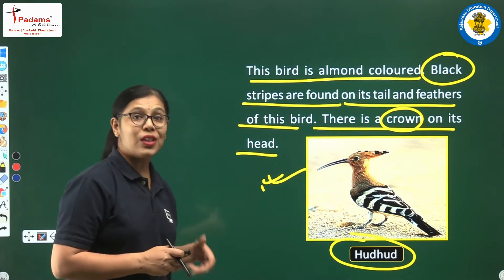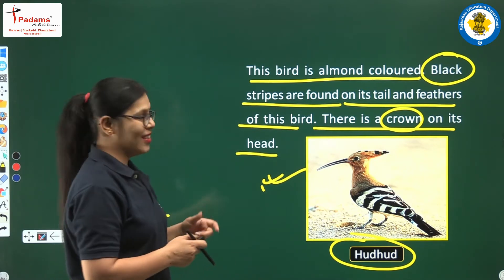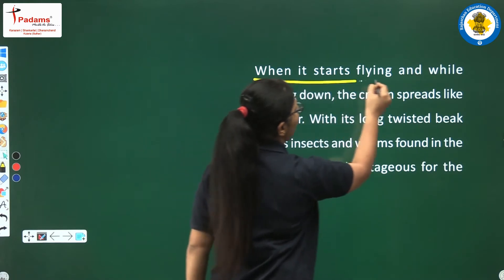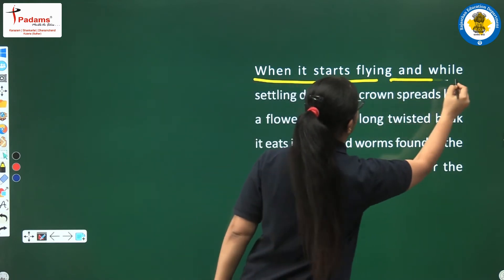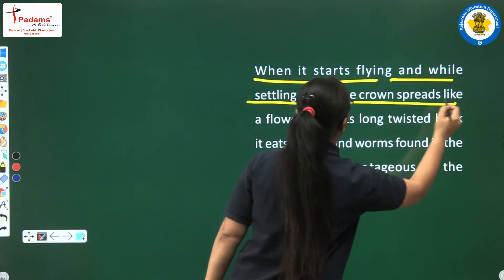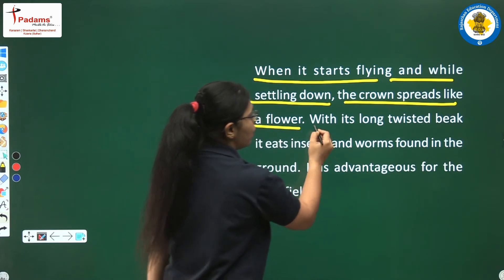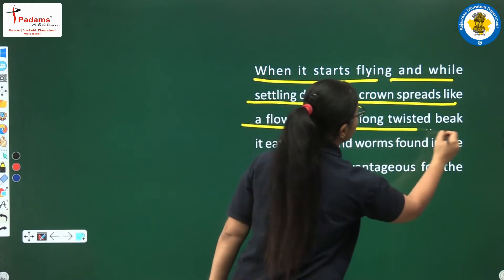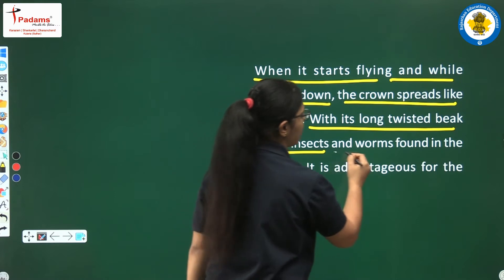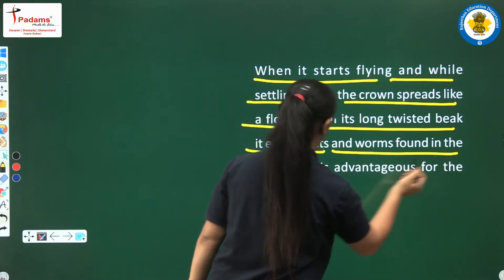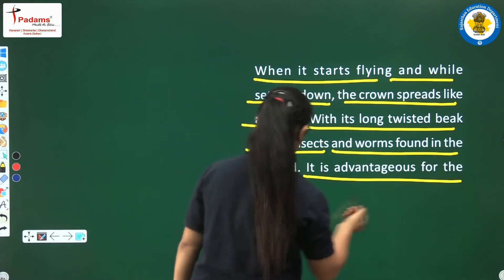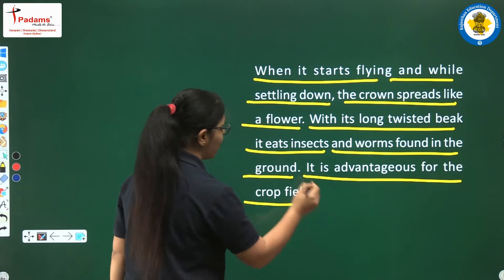When it starts flying and while settling down, the crown spreads like a flower. With its long twisted beak, it eats insects and worms found in the ground. It is advantageous for the crop field.